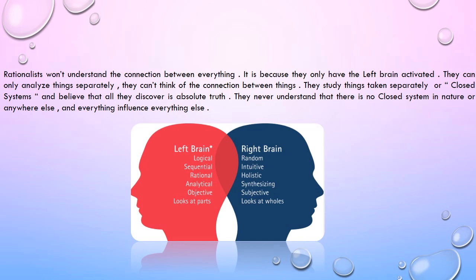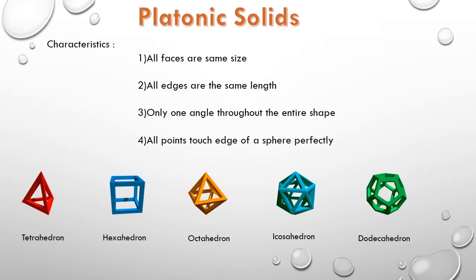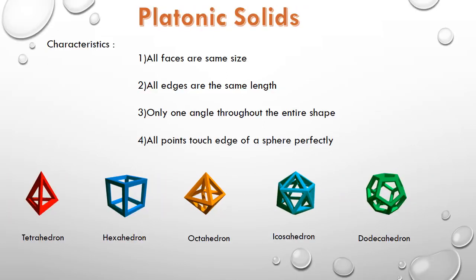There must exist a balance between the two brain functions. Understanding the concept of platonic solids is vital in understanding the five elements. Platonic solids have certain characteristics: all faces are the same size, all edges are the same length, only one angle throughout the entire shape, and all points touch the edge of a sphere perfectly. Only five solids have all these characteristics: tetrahedron, hexahedron, octahedron, icosahedron, and dodecahedron — the platonic solids.